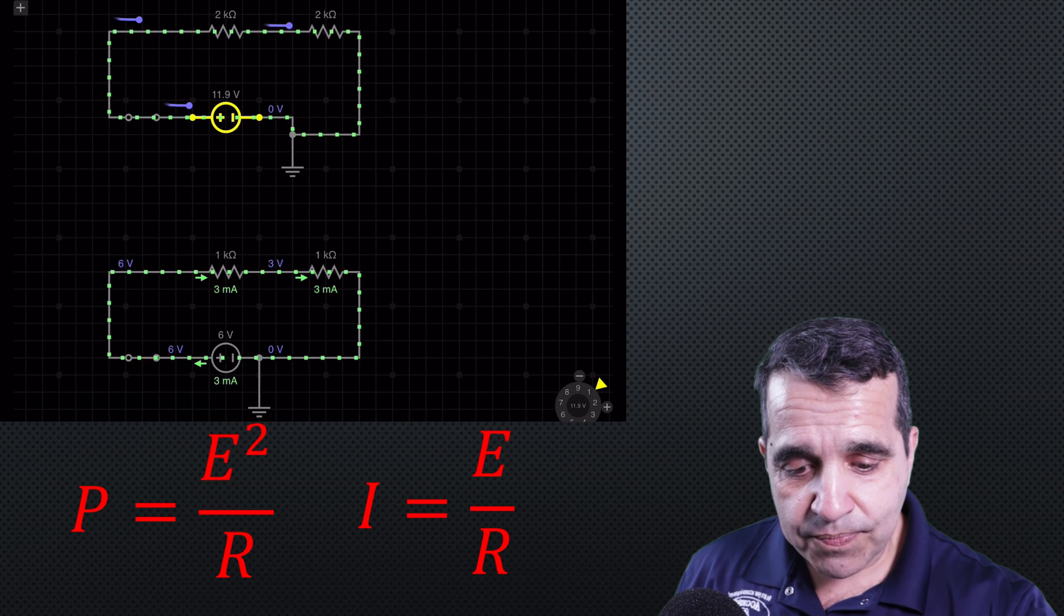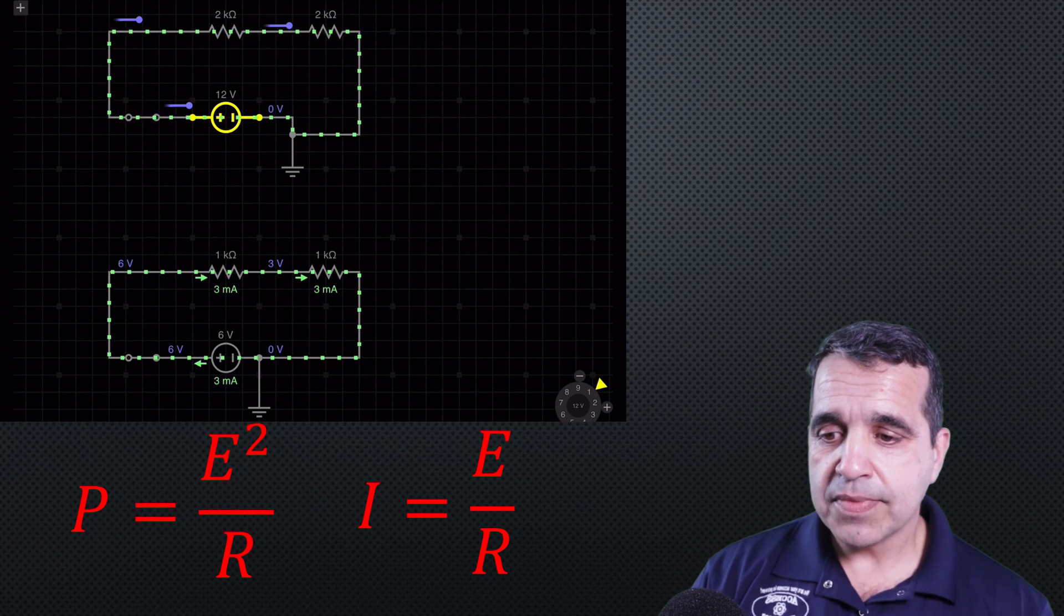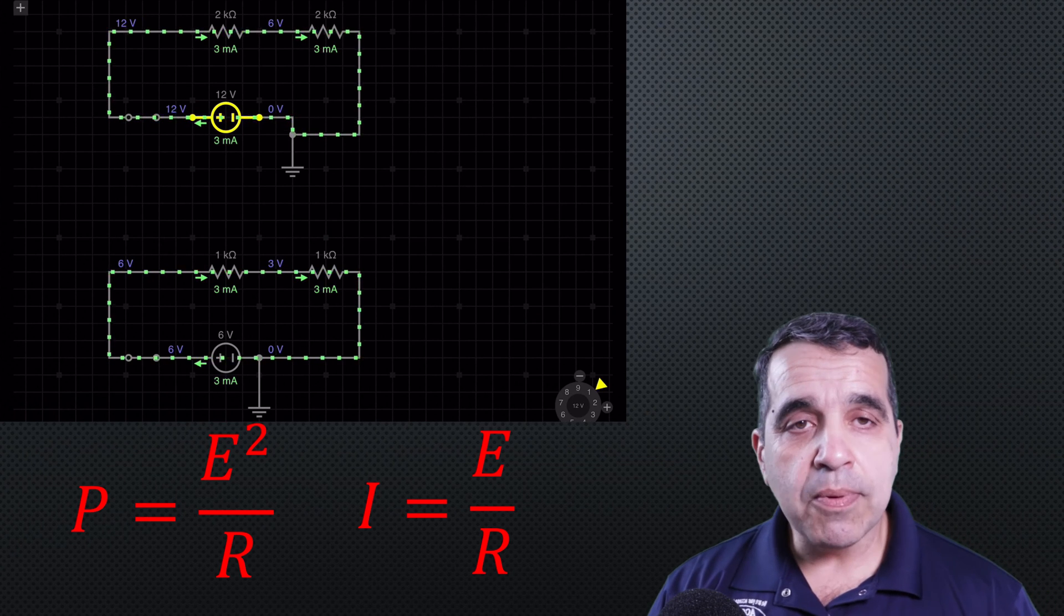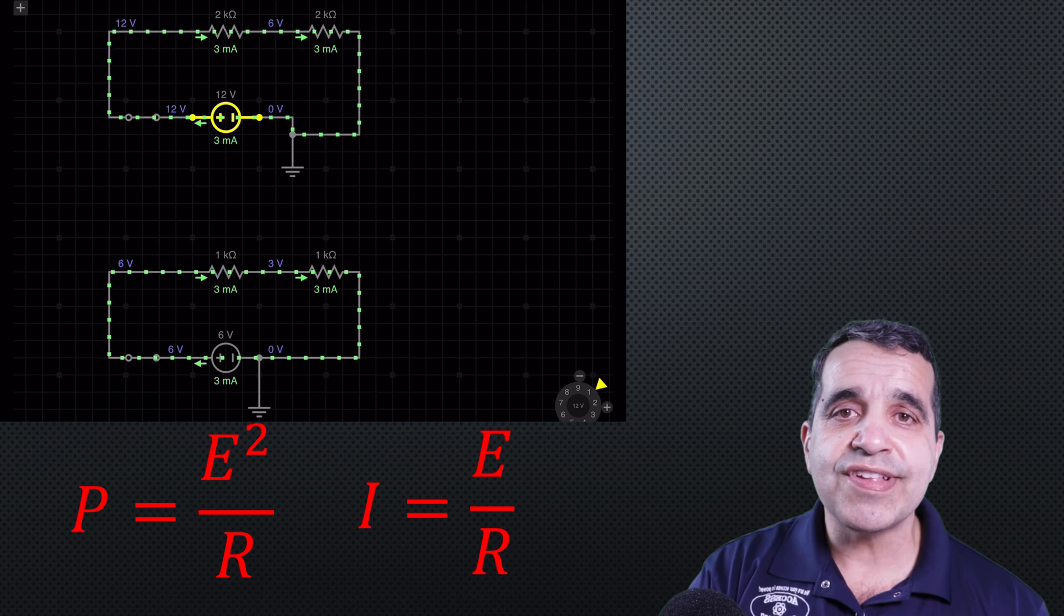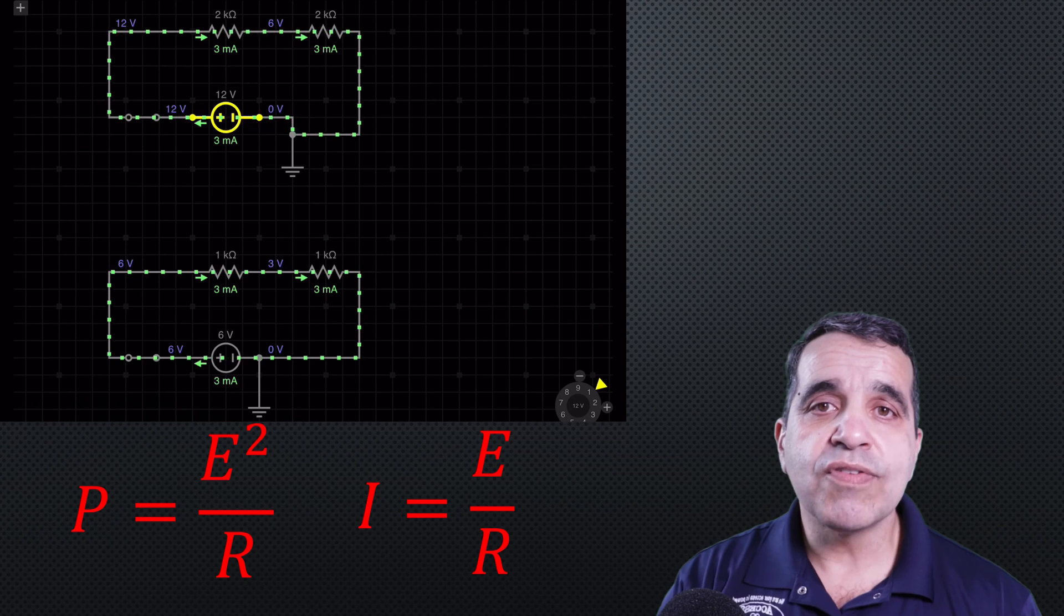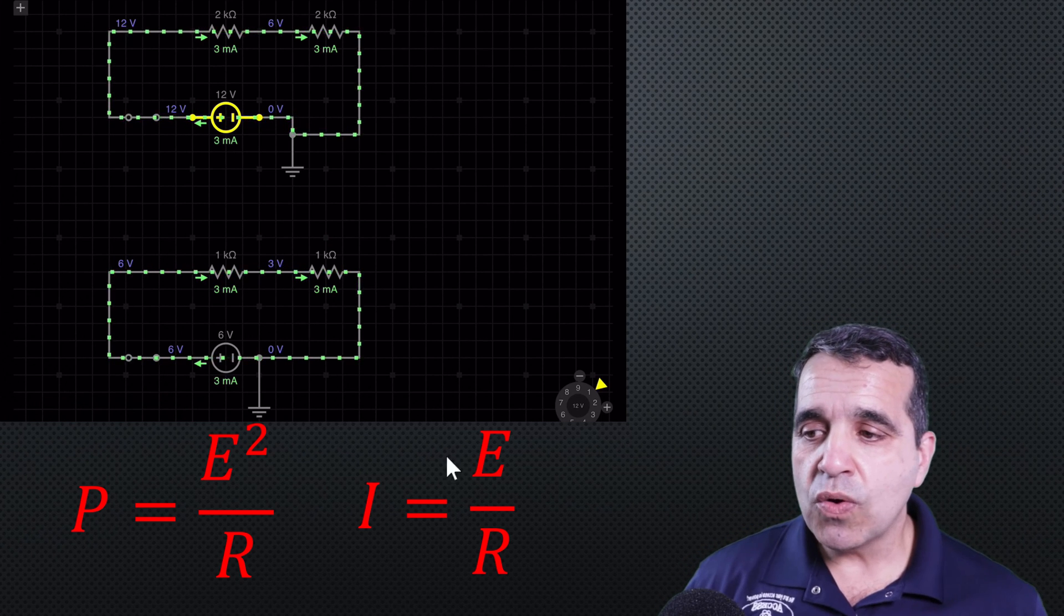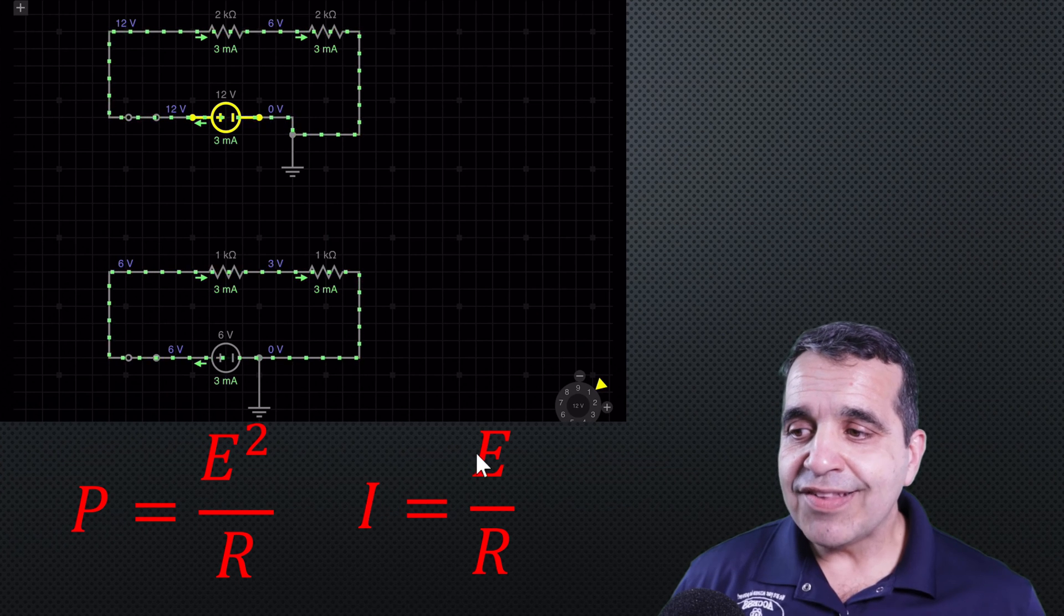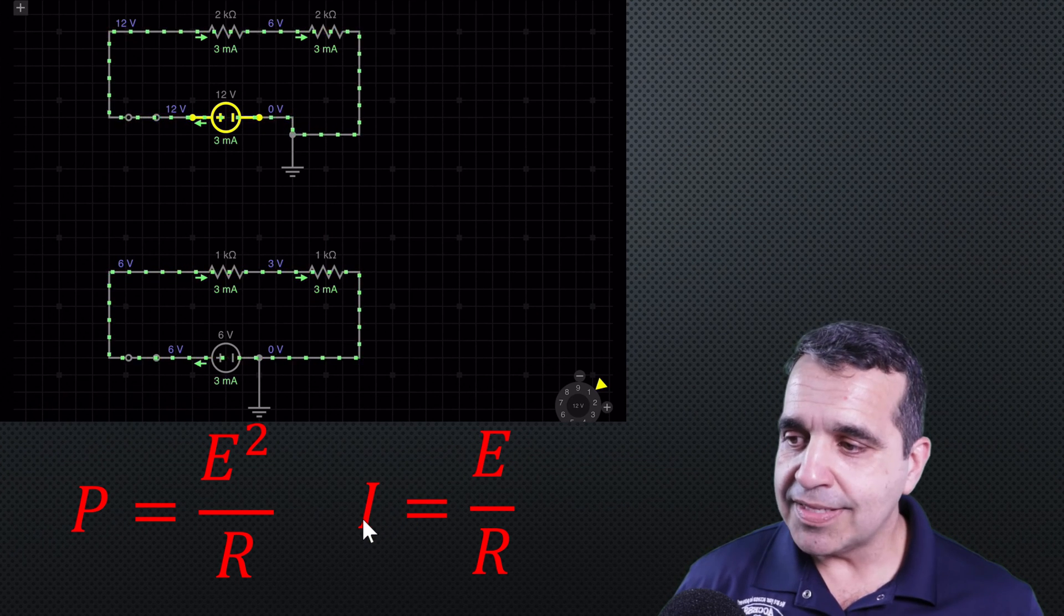So if I took my power supply and I took it to 12 volts, I would double my amperage or get right back to my 3 milliamps, even though I'm pushing it through 4,000 ohms of resistance. I got my 3 milliamps of current. So amperage is directly proportional to the voltage. If I double the voltage, I double the amperage.